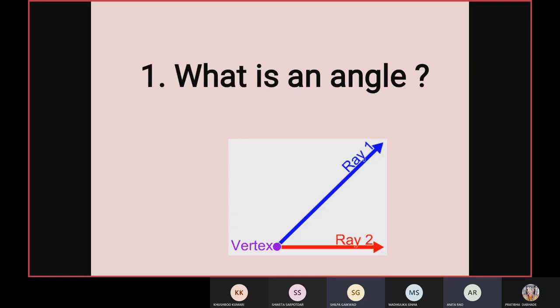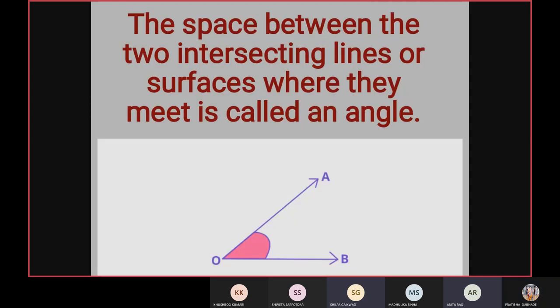Next, can anyone tell me what is an angle? It is a joining of two rays. Yes, correct. Nearly it is correct. More anyone? Okay. The space between the two intersecting lines or surfaces where they meet is called an angle. In this picture you can see the pink color one. That pink color space is called an angle. It forms between the two rays or two intersecting lines.